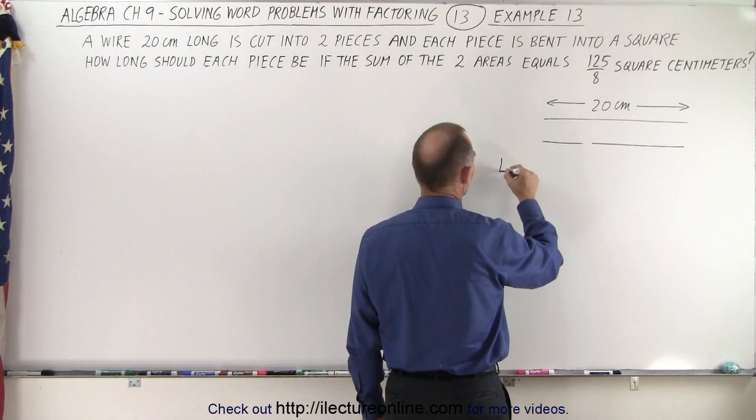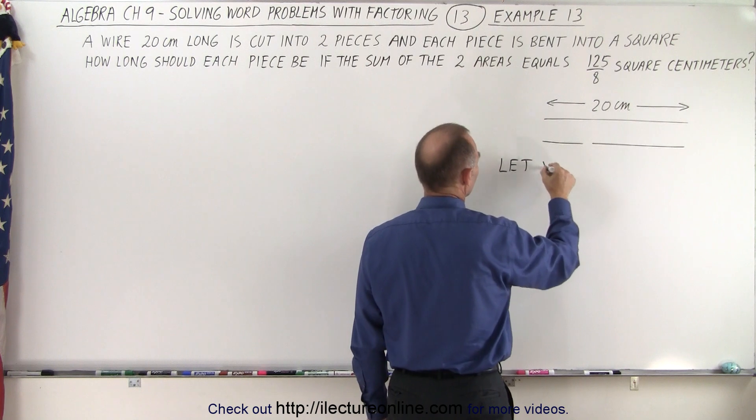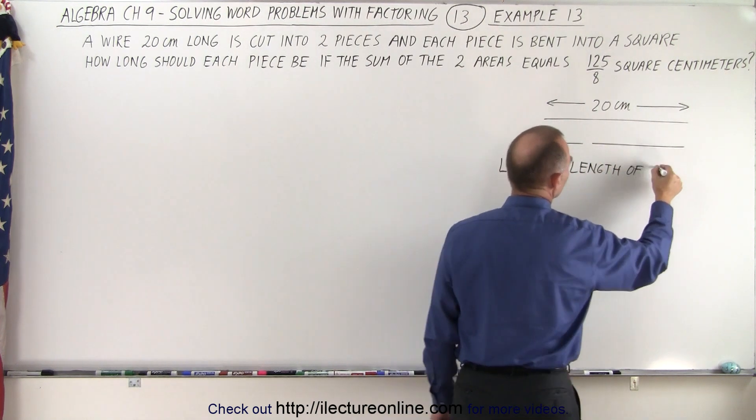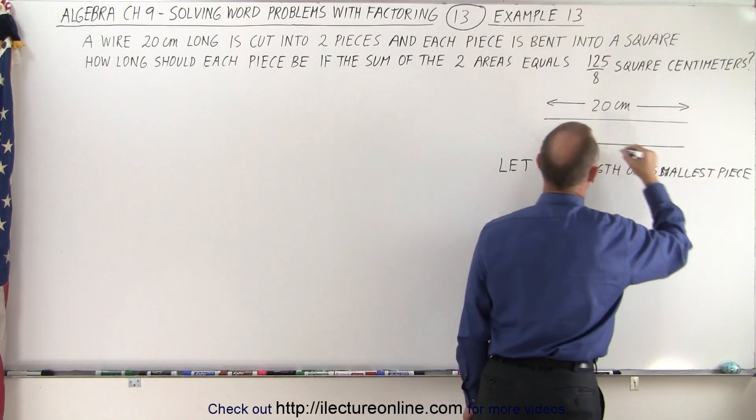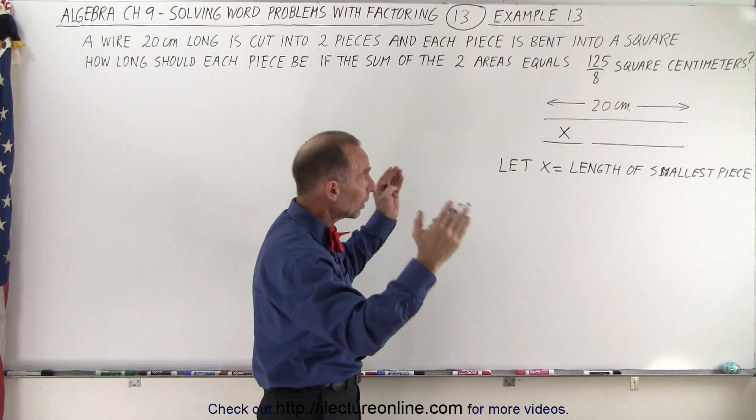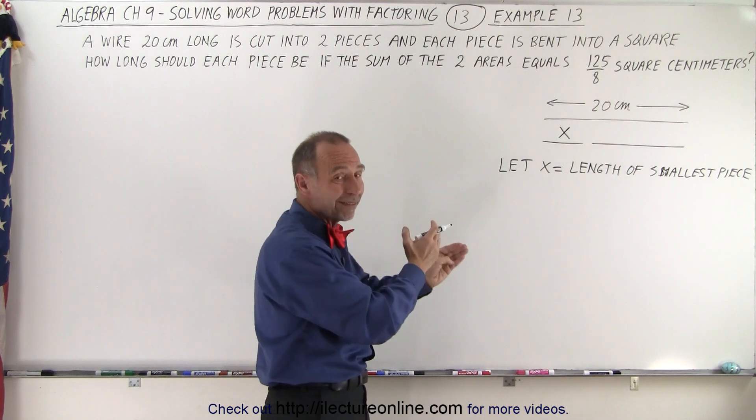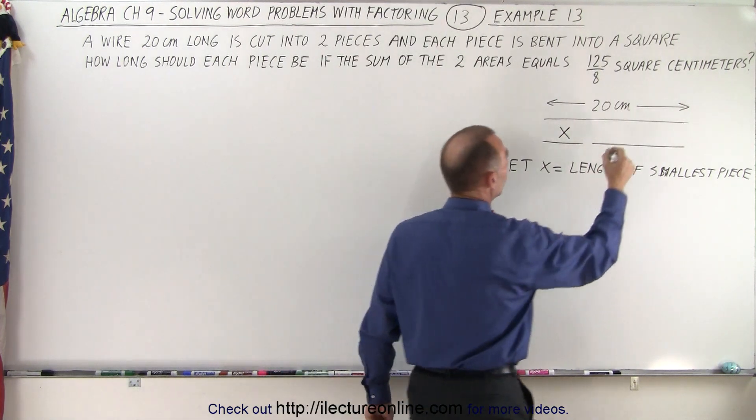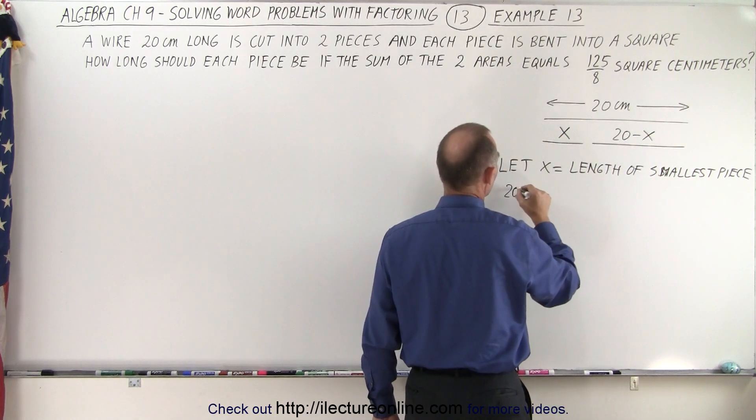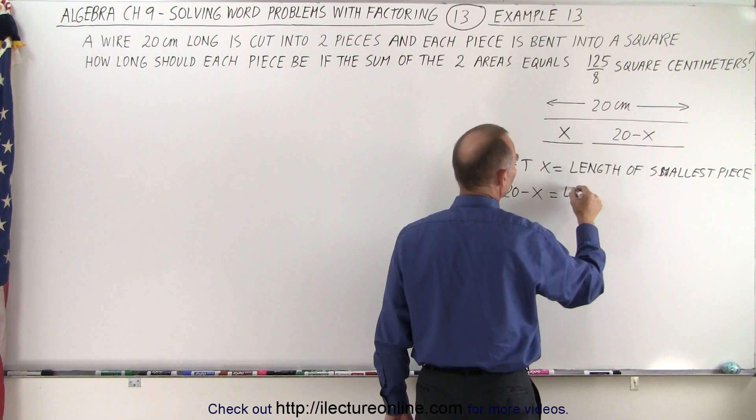We're going to let x equal the length of the smallest piece. So we're going to call this x. Then how do we represent the length of the other piece? Well, if the total length is 20 and one of them is x, then 20 minus x would be the length of the other piece. So that means that 20 minus x equals the length of the other piece.